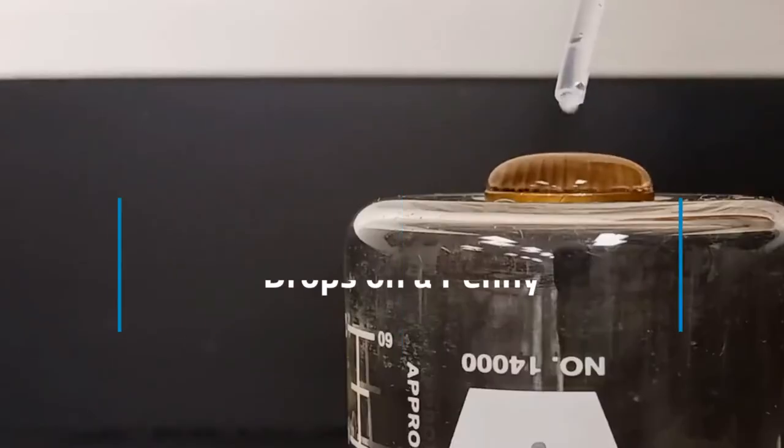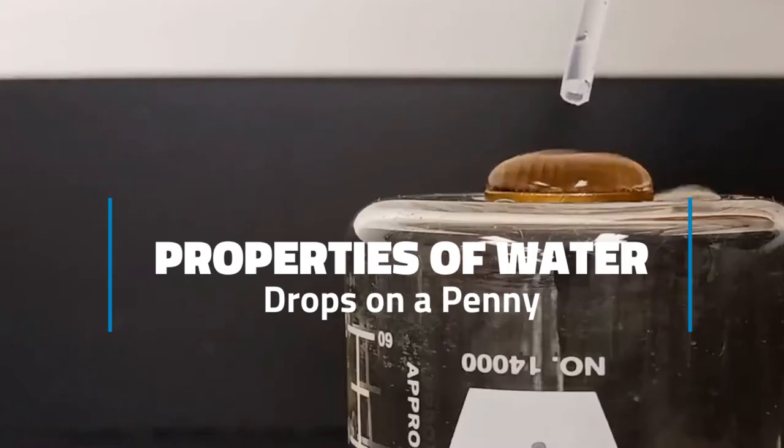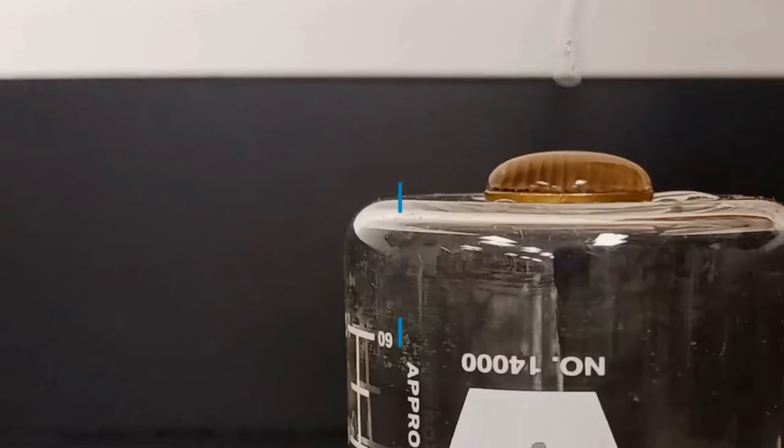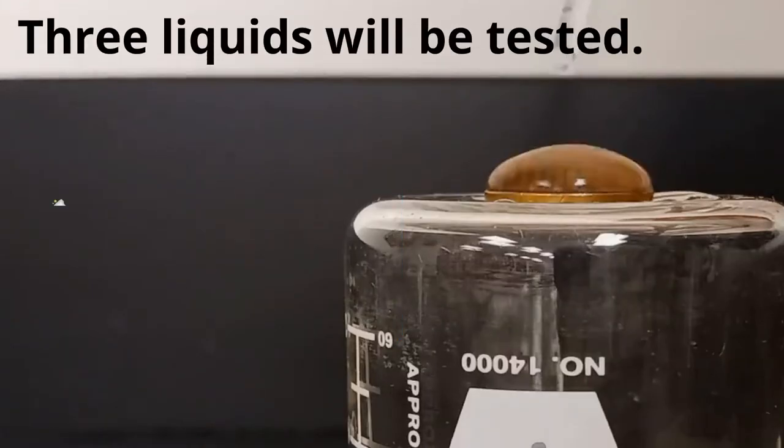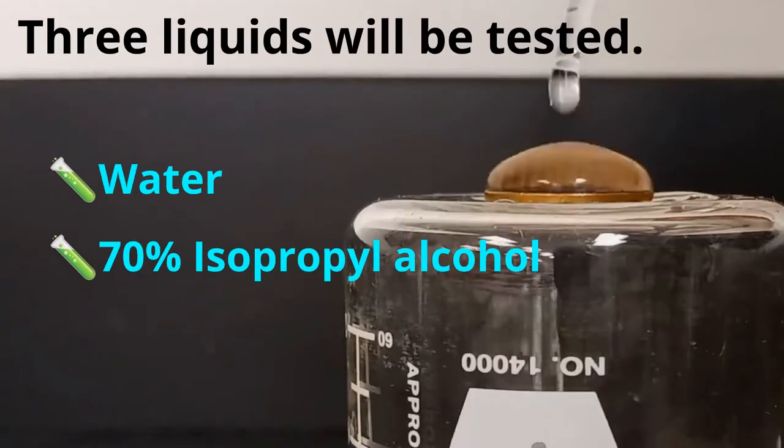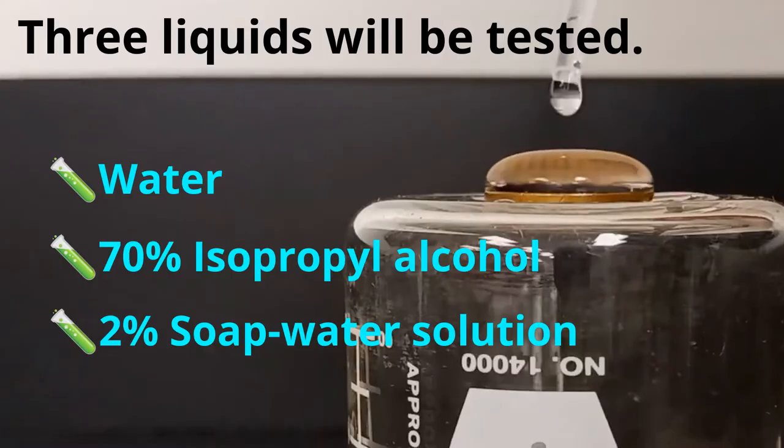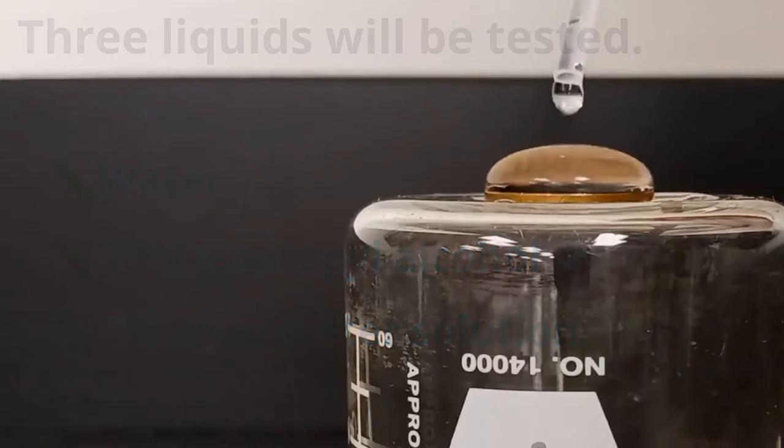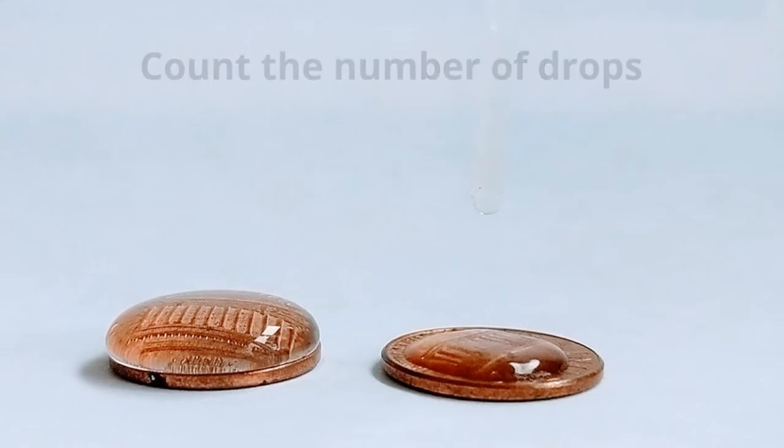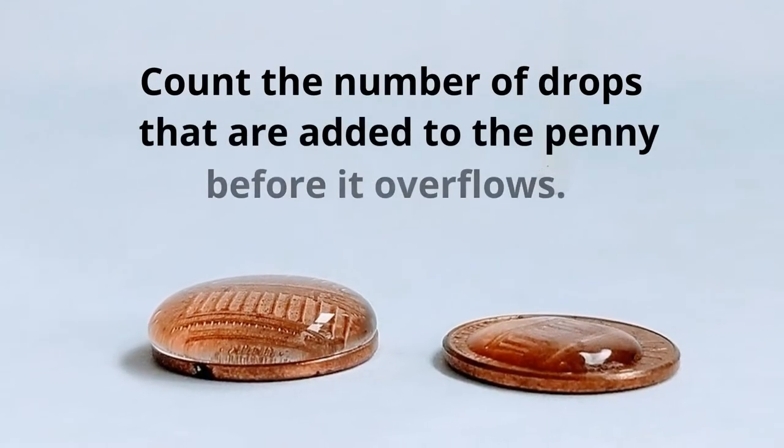This experiment will explore the properties of water. Three liquids will be tested: water, 70% alcohol, and a 2% soap water solution. Count the number of drops that are added to the penny before it overflows.